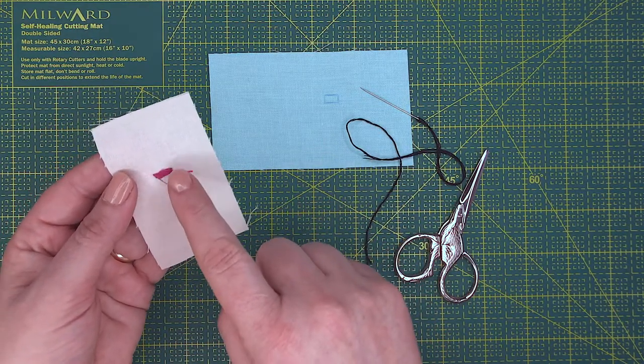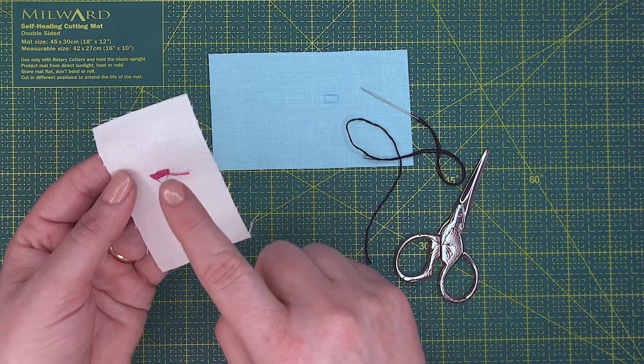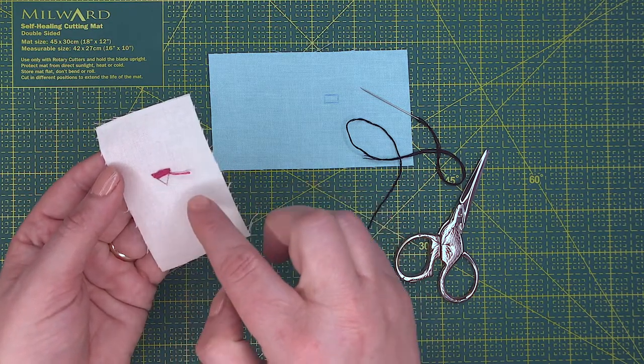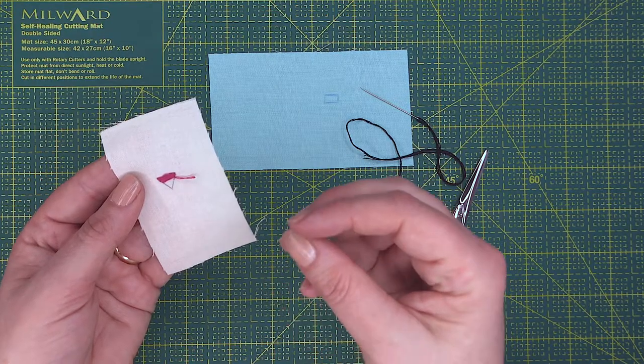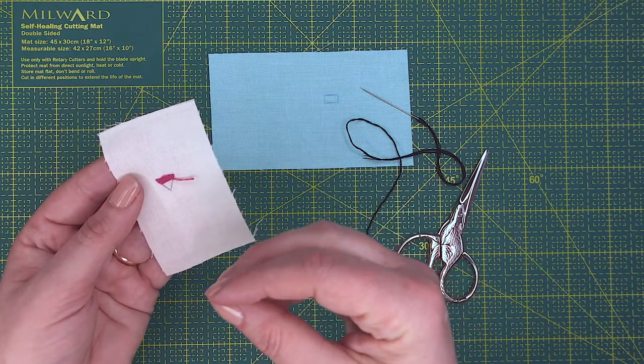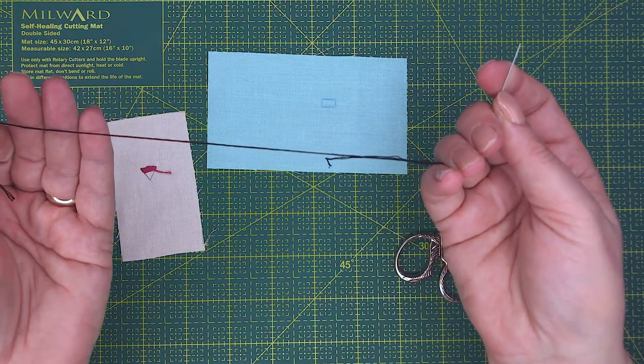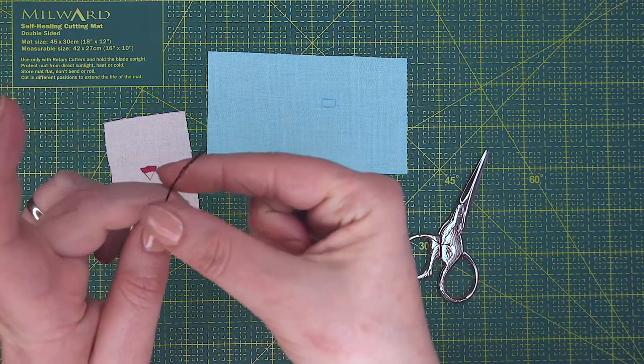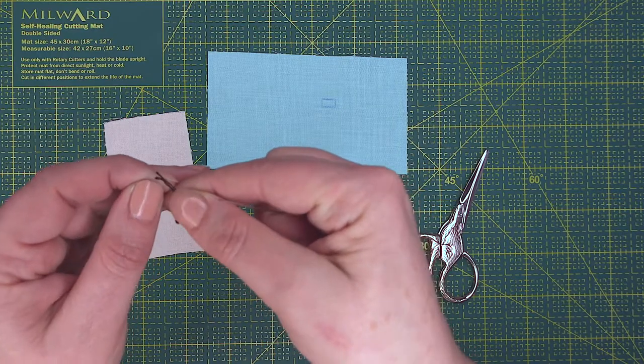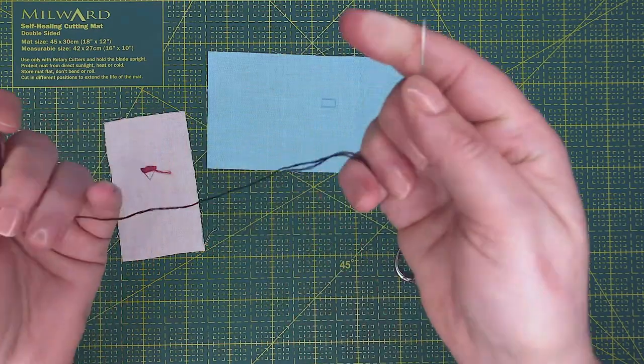This can be worked in a triangle, in a square, it can be worked in a circle. Basically it's like a running stitch that's done right next to each other. In this video I'm going to be using three strands of black embroidery floss.